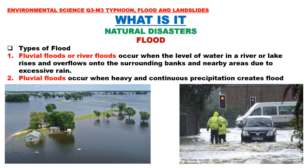Let's discuss the types of flood. Fluvial floods, or river floods, occur when the level of water in a river or lake rises and overflows onto the surrounding banks and nearby areas due to excessive rain. When rivers and lakes become too full, they overflow and flood the surrounding areas.